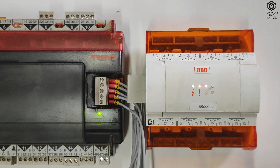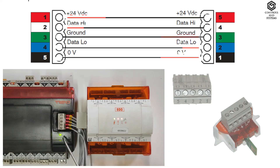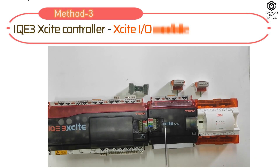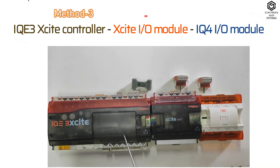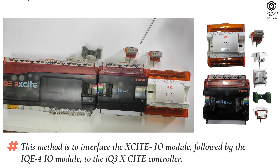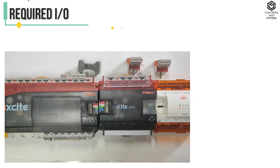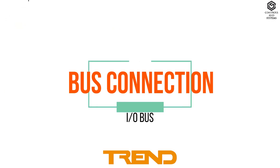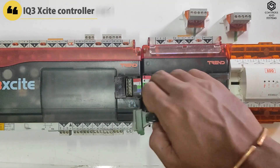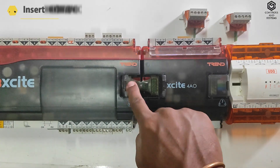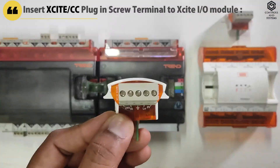Now switch on the IQ3 X-Site controller power supply. This is the I.O. bus connection diagram of the IQ3 X-Site controller to the IQ4 I.O. module. IQ3 X-Site controller to X-Site I.O. module and IQ4 I.O. module: this method interfaces the IQ3 X-Site I.O. module followed by the IQ4 I.O. module to the IQ3 X-Site controller. Required I.O. buses are X-Site IC, IQ4 IC ADPT, and X-Site CC. First, connect the IQ3 X-Site controller and X-Site I.O. module using the short rigid interconnector or jumper module.